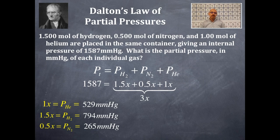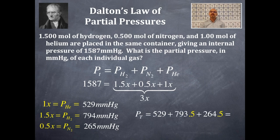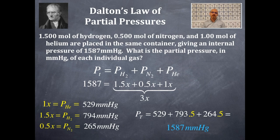As a check — these are the partial pressures: helium at 529, hydrogen at 794, and nitrogen at 265 millimeters of mercury, respectively. I want to make sure these add up to the total pressure, which is the sum of all individual pressures. Using significant figures, this gives 1,587 millimeters of mercury. There is a slight significant figure issue, but it does add up to the correct value — that's your check.